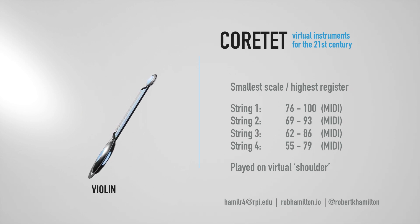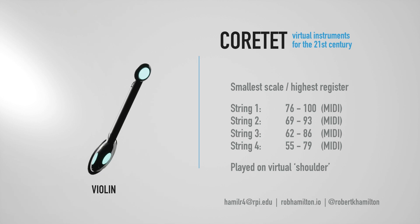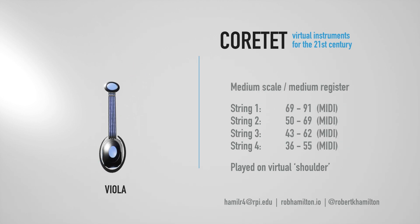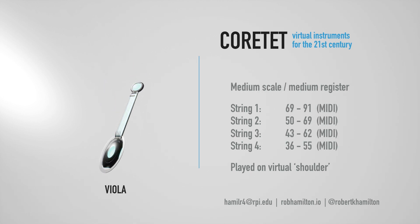For the violin, viola, and cello presets, each virtual string is tuned in fifths and emulates the tuning and performance range of the model instrument.